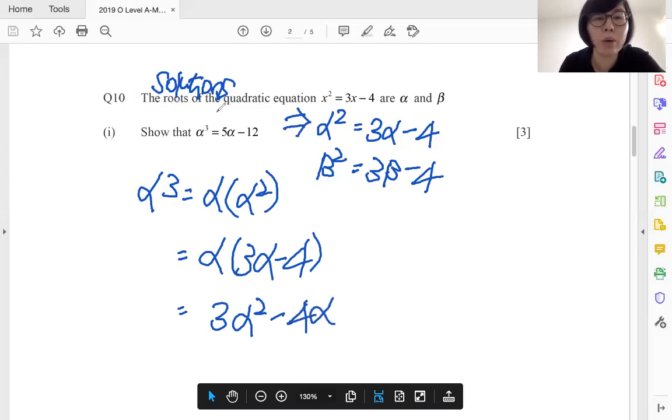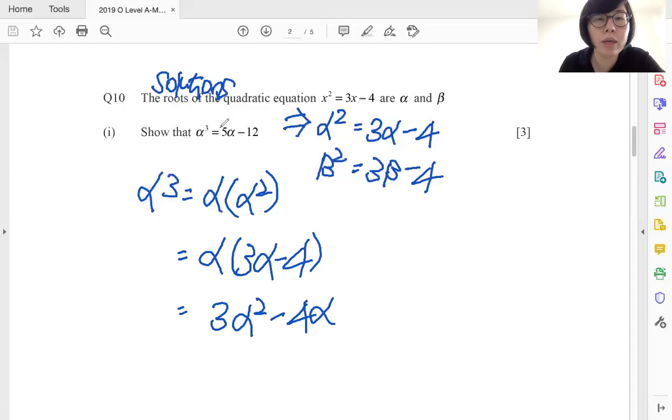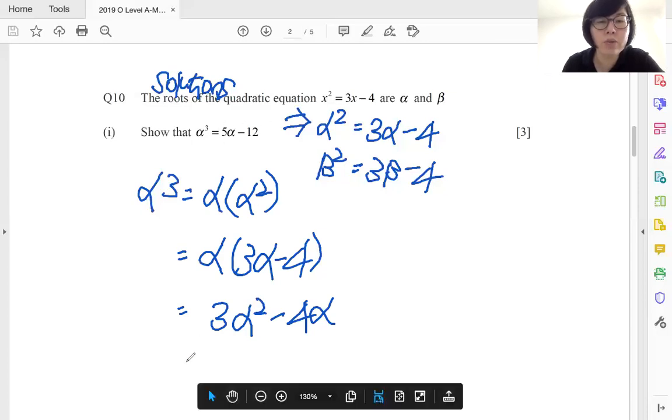So let's take a look at what we need to prove. Now looking at the right hand side, it's only about alpha, which means to say I need to substitute my alpha square. And can I do that? Yes I can. It's just simply 3 alpha minus 4 again, minus 4 alpha.